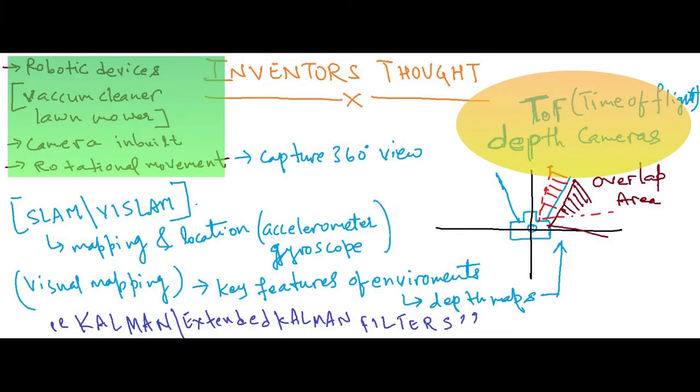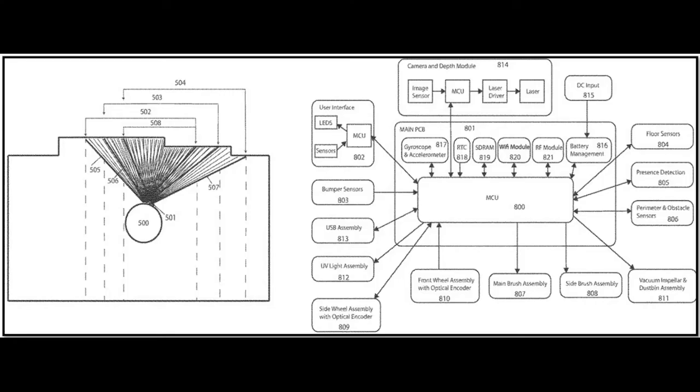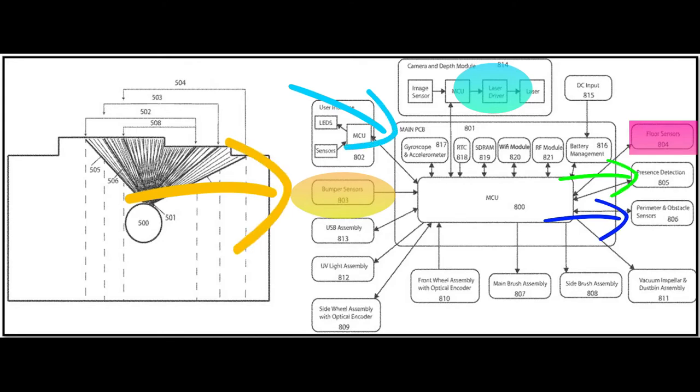Vacuum cleaner is one such example. It is equipped with camera depth module, laser, floor sensors, presence detection, obstacle detection, and SLAM. These sensors make navigation easy for the autonomous bots.